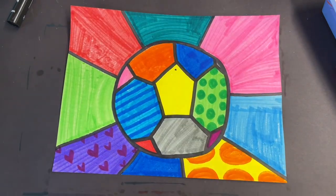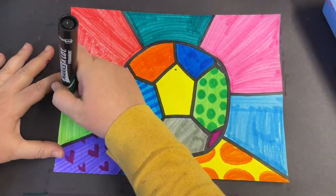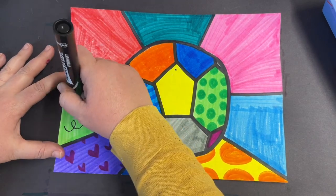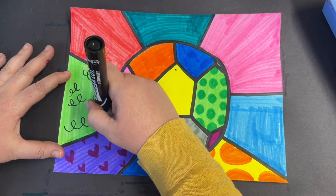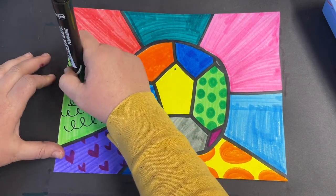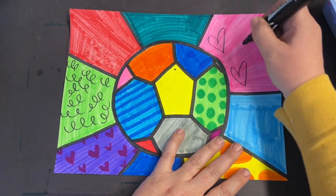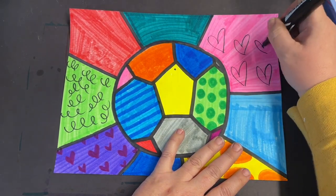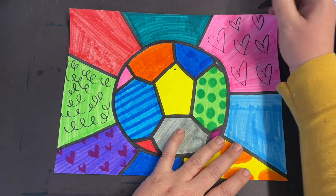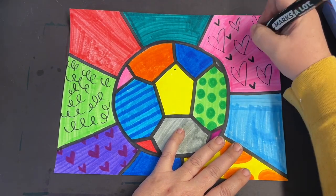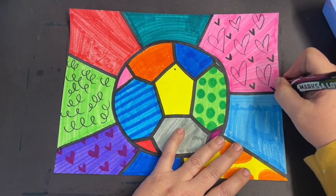When you finally finish coloring, you can get a black marker. And if you want to go back in and add any more designs on top of those color blocks that you added, that was definitely a style that Brito was known for. You don't have to add a pattern to every section. Remember, you do want that soccer ball to be the star of the show.